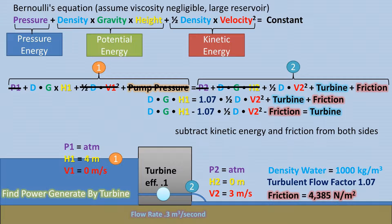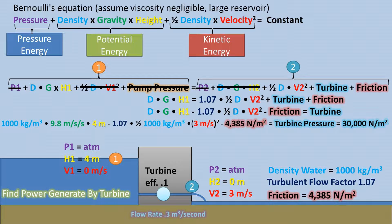Now, we must get what we are solving for, turbine pressure, to one side. So, we subtract the kinetic energy portion and the friction portion of this equation from both sides. We are left with this equation. Plugging in our values into our calculator, we get a value of 30,000 newtons per meter squared, or pascals, of turbine pressure.